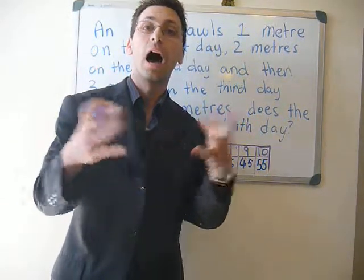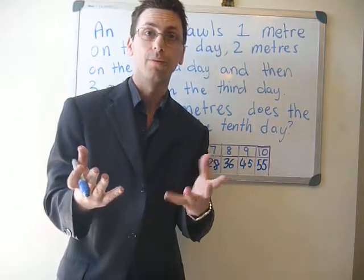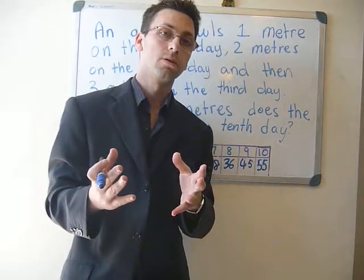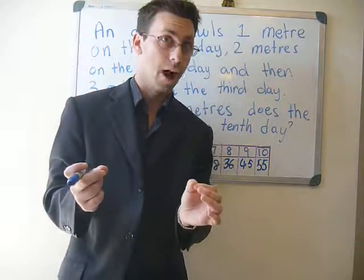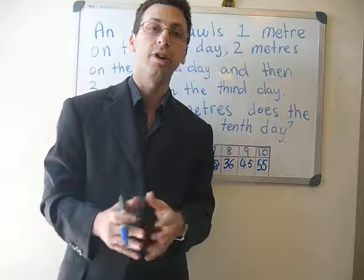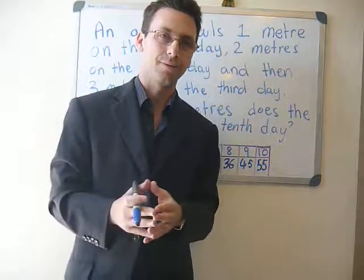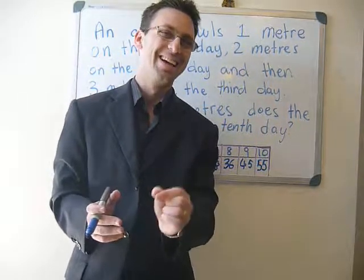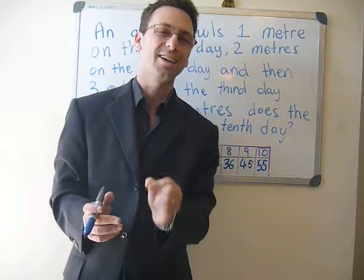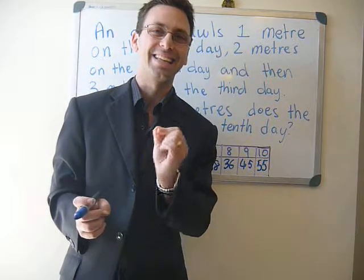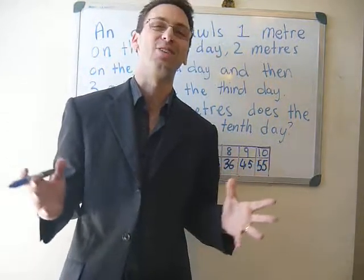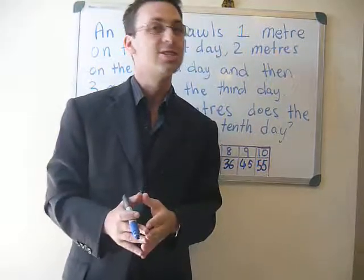So, the situation is, if you had a hundred numbers, the half way point is fifty and fifty-one. Add them together, equals a hundred and one. Divide it by two, fifty point five, then times it by a hundred and you will get your answer.